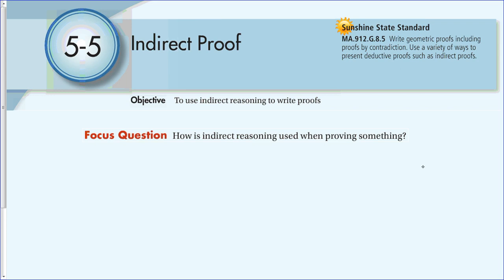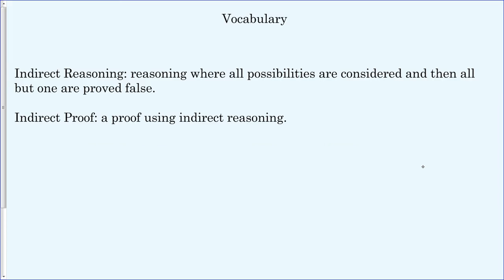This is section 5-5: Indirect Proof. Our objective is to use indirect reasoning to write proofs. The focus question is: how is indirect reasoning used when proving something? Indirect reasoning is when all possibilities are considered and then all but one are proved false. An indirect proof is a proof using indirect reasoning. In an indirect proof, a statement and its negation are the only possibilities. When one possibility leads to a contradiction of a known fact, you can eliminate it. For this reason, indirect proof is sometimes called proof by contradiction.